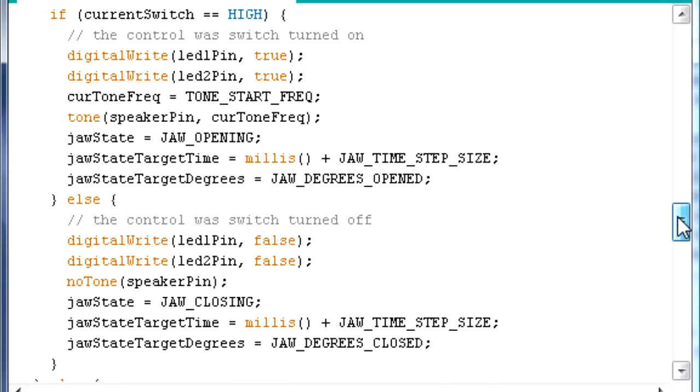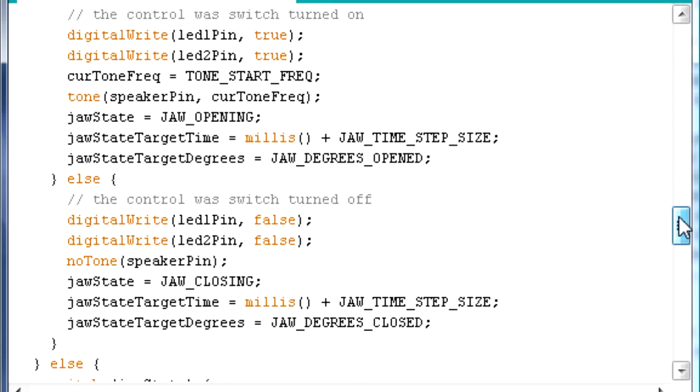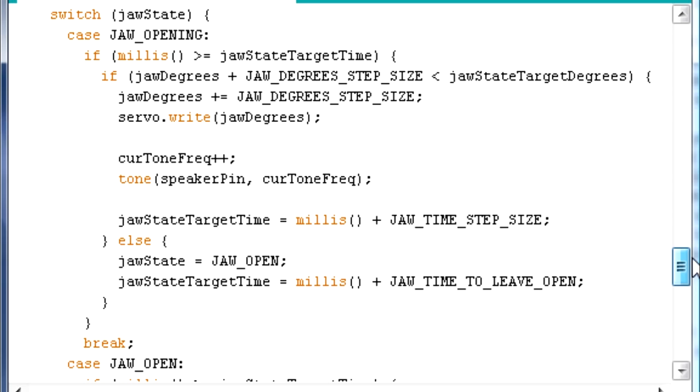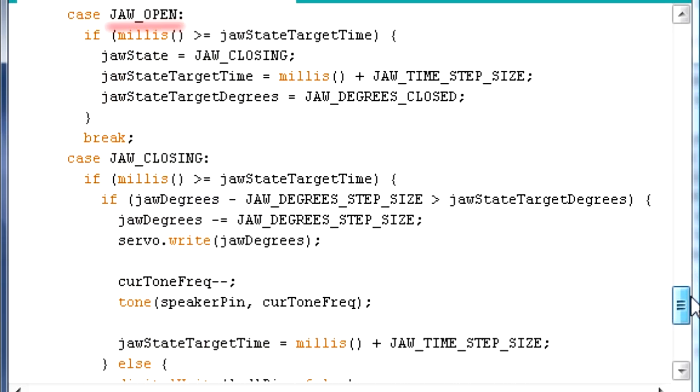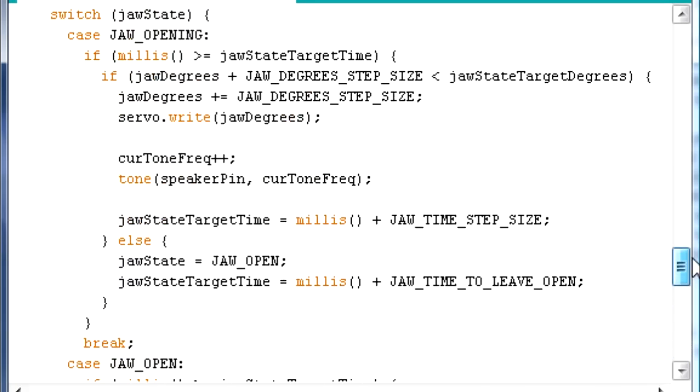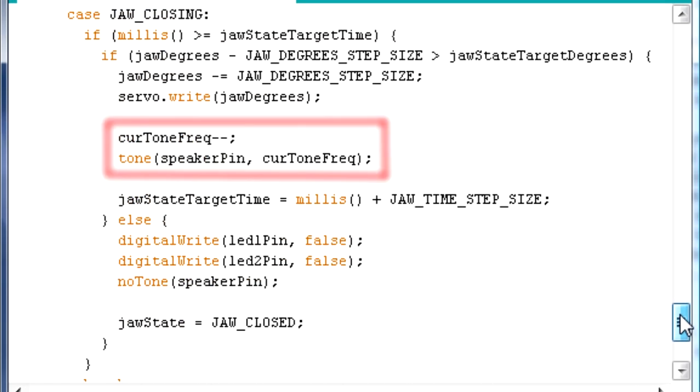Instead it does some initial checking for the switch setting to see if it should start or stop the whole sequence of events. And then there's a big state machine that does different things depending on if the jaw is supposed to be opening, held open, closing, or is closed. The sound is done using the tone function, with the frequency increasing as the jaw is opened, and decreasing as the jaw is closed, until finally the no tone function turns it off.